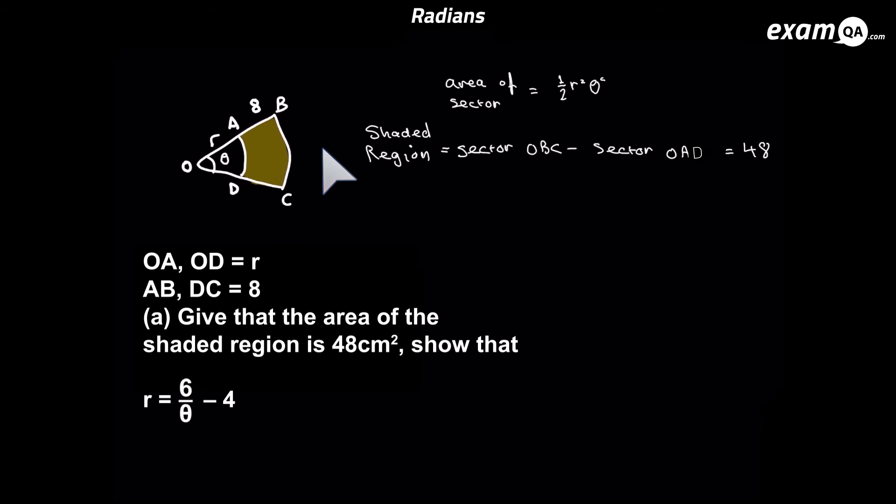We're going to use the area of a sector formula. That's what's going to be important here. And you should know that one by now is half r squared theta. So the shaded region is OBC, that's the sector OBC minus the sector OAD. That should leave you with that shaded region. And we know the area of that is 48. So we've got the area of the big sector minus the area of the minor sector. The radius of the big sector is r plus eight. That's why we've got half r plus eight squared times theta.